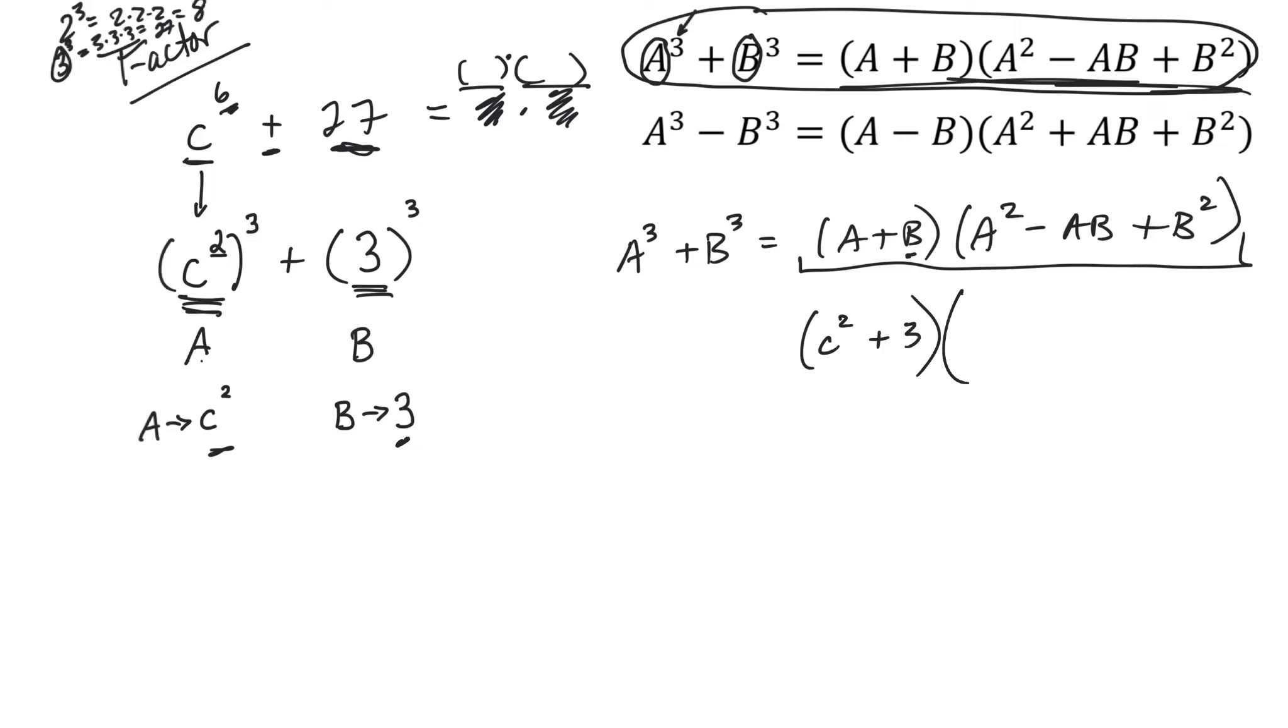And then A squared, so it's, oh, that's a little confusing. So it's like C squared squared, okay? Minus A times B, so C squared times B, or 3 would be 3C squared, plus B squared, so 3 squared would be 9.